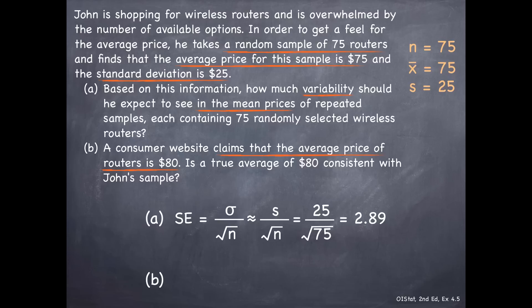So let's find out how many standard errors—since we're dealing with means here, we want to focus on the standard error—how many standard errors is 80 away from 75? To calculate that, we simply subtract the two. A difference of $5 basically means 1.73 standard errors away from John's sample.